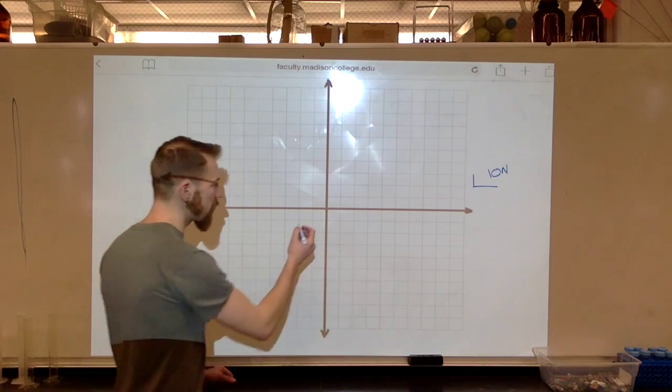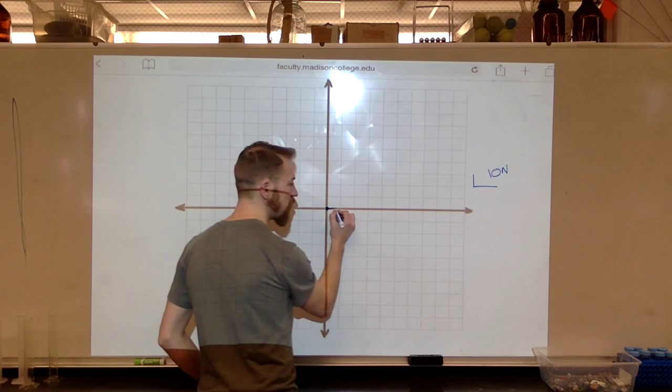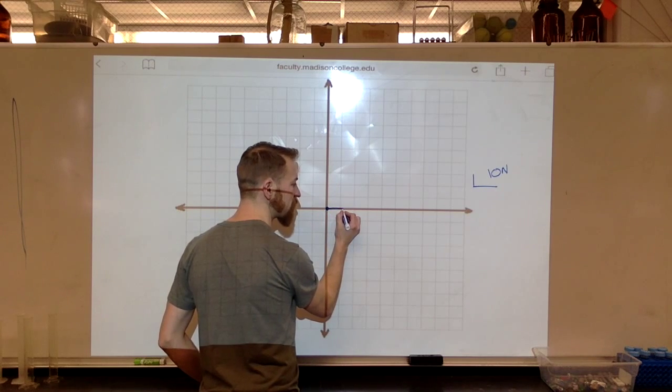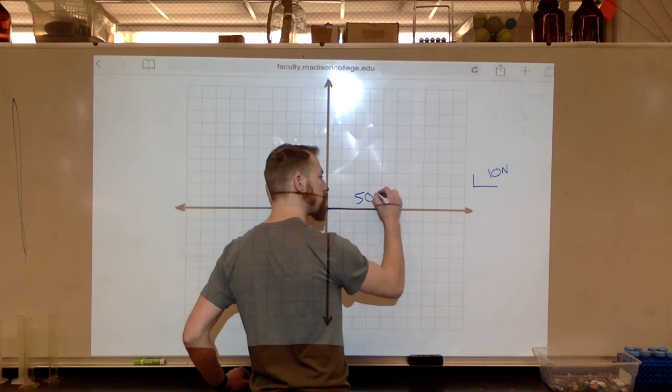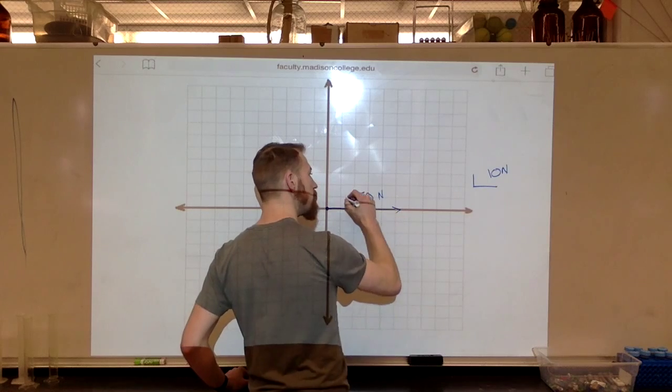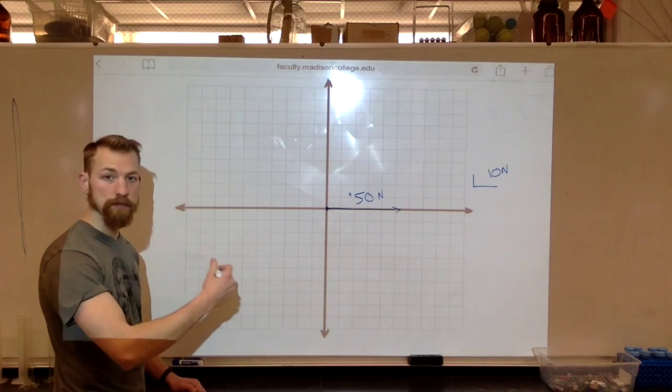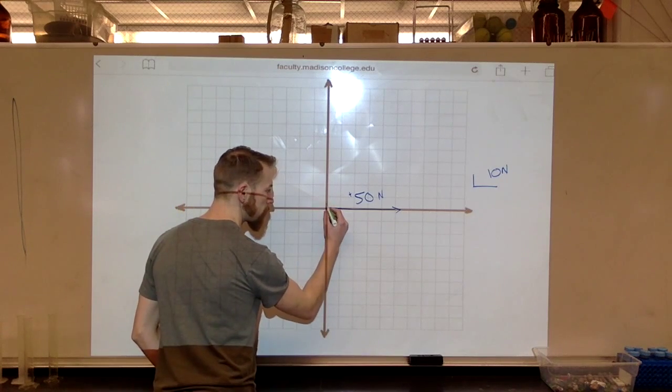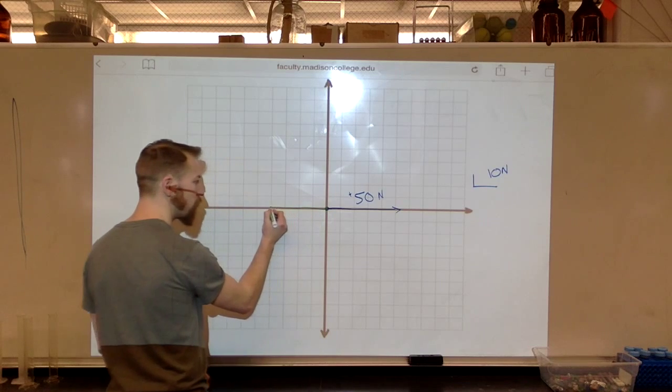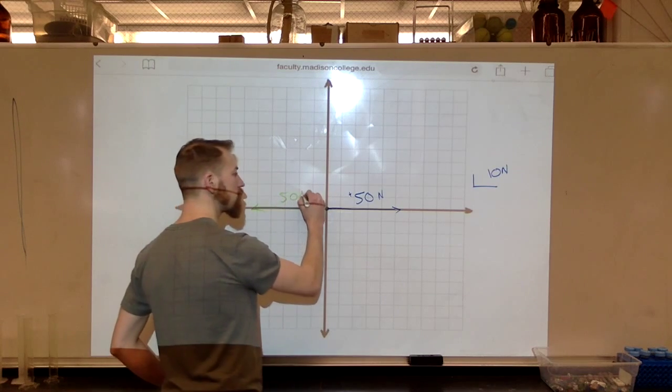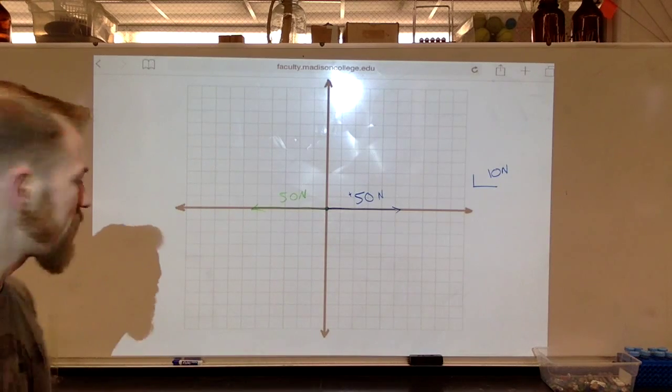And we said that Porter was pushing on this box, I said 100, but let's make it 50. So that's one, two, three, four, five. Porter was pushing on this box with 50 newtons of force in the positive direction. I was pushing on this box with 50 newtons, one, two, three, four, five, 50 newtons of force in the negative direction.